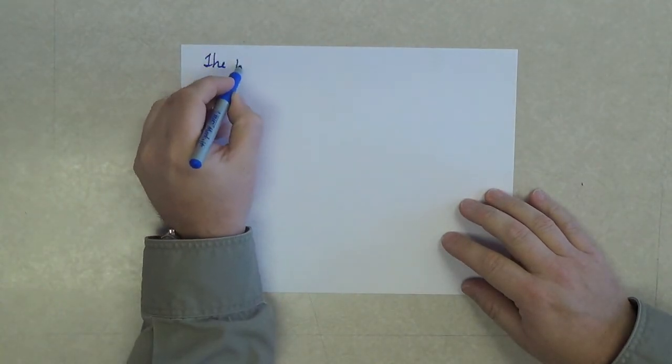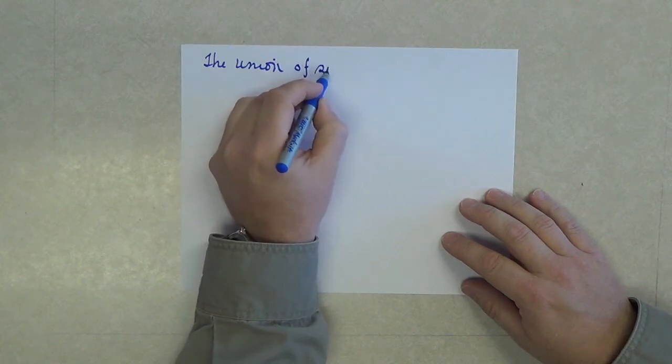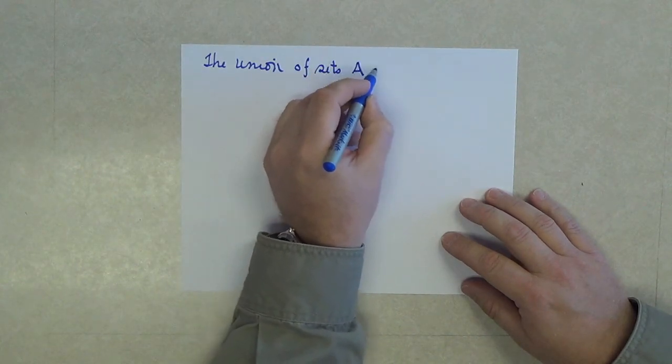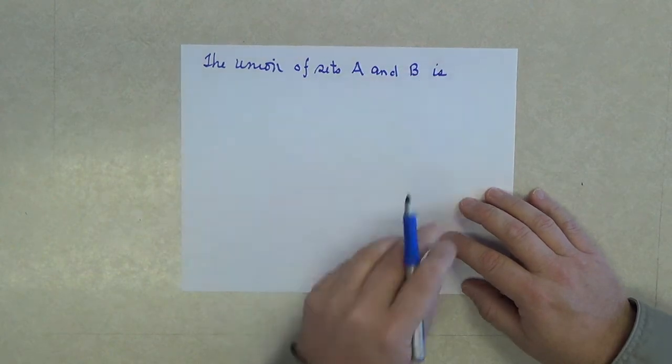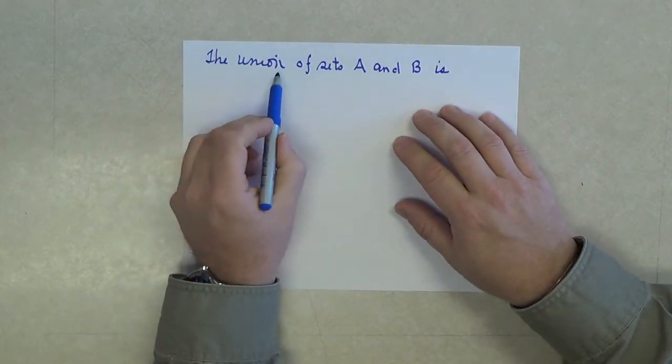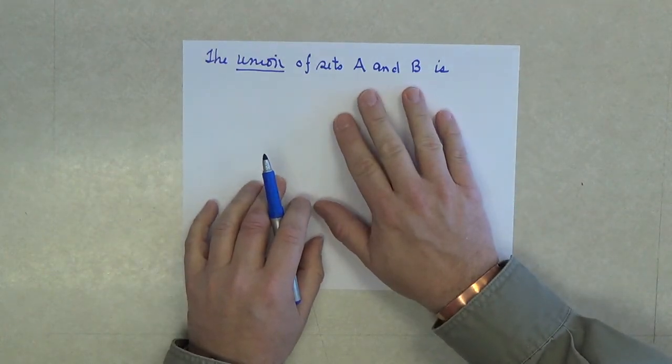Let us begin with the idea of the union of two sets. The union of sets A and B is... We're defining the word union on two sets A and B.